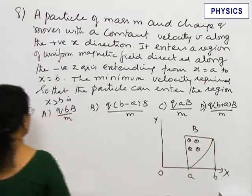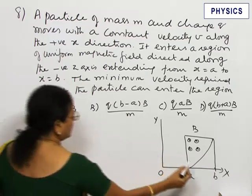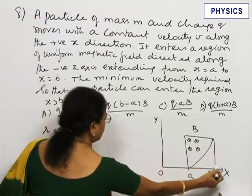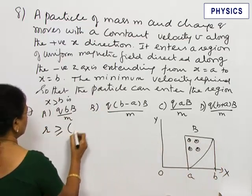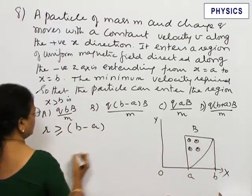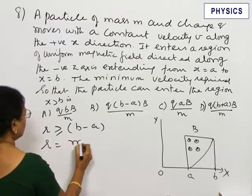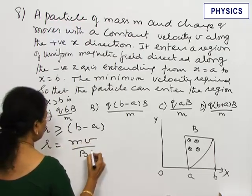Now, that radius must be such that the particle can enter the region X greater than B. R must be equal to or greater than B minus A, and R equals MV divided by BQ.